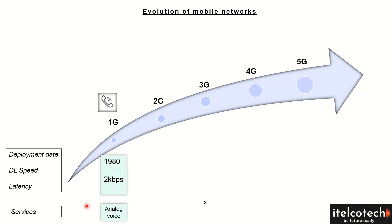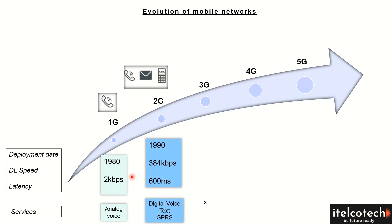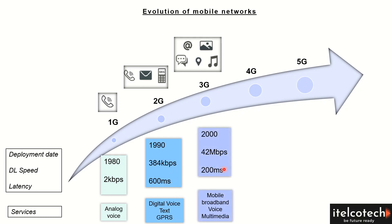In 1G, it was more about analog services — analog voice. In 2G, it moved towards digital voice and text services. Then in 2.5G, GPRS was introduced with a speed of 384 kbps.